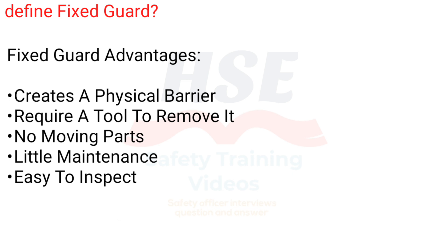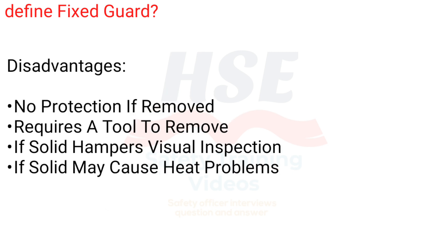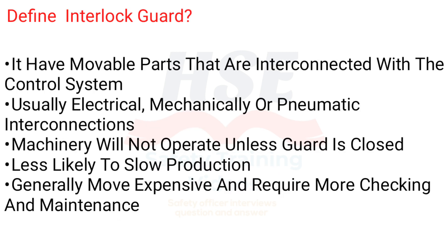Fixed guard advantages: creates a physical barrier, requires a tool to remove it, no moving parts, little maintenance, easy to inspect. Disadvantages: no protection if removed, requires a tool to remove - if solid, hampers visual inspection, if solid may cause heat problems. Define interlock guard: it has movable parts that are interconnected with the control system, usually electrical, mechanical or pneumatic interconnections. Machinery will not operate unless guard is closed. Less likely to slow production. Generally more expensive and requires more checking and maintenance.